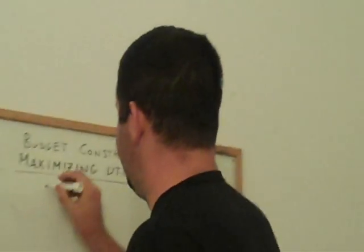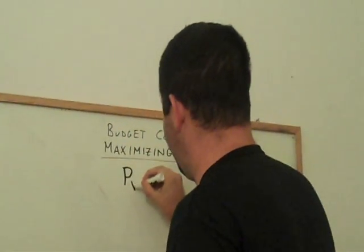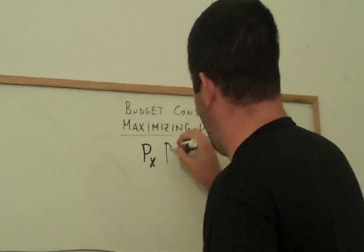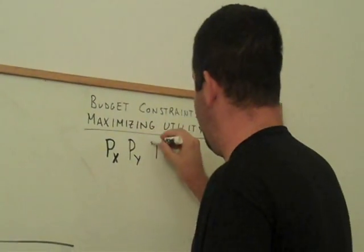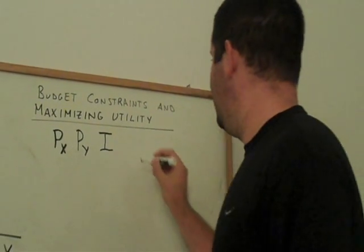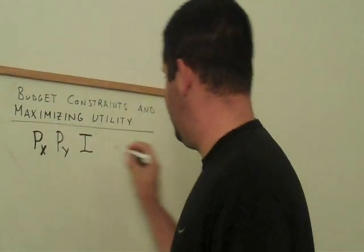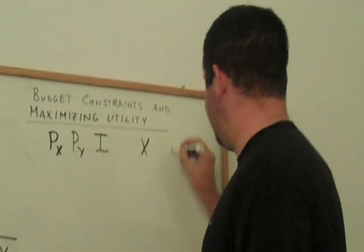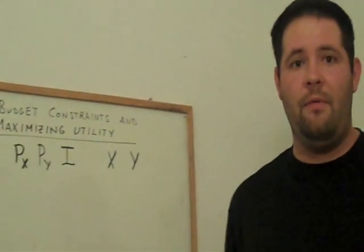The budget constraint tells us, given price of X, price of Y, and income, what bundles of X and Y can I afford? Given those three things, what bundles of X and Y can I afford?